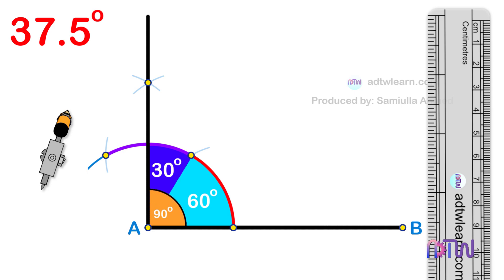But we need 75 degrees. To get 75 degrees, we need to divide this 30 degree arc into 2. Take a compass, using these points as centers, and cut arcs as shown.